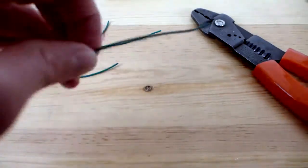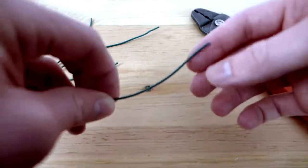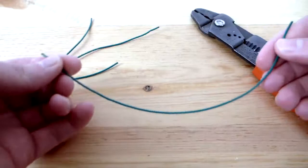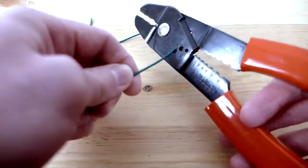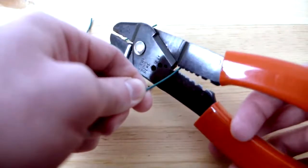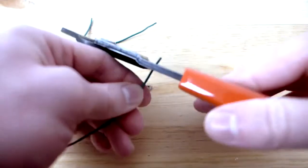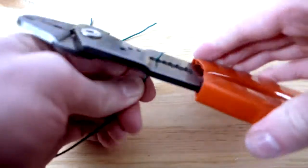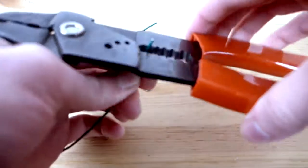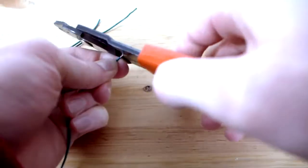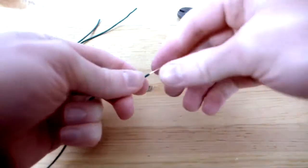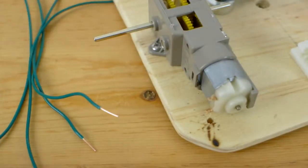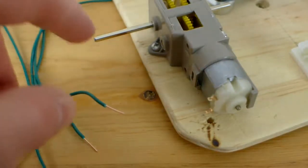Now we need to strip off the ends on each of these wires. So we need to expose some of the copper wiring. So take your wire cutters. Don't squeeze too hard. Just kind of work it around the wire. There we go. So all the wires have been stripped.